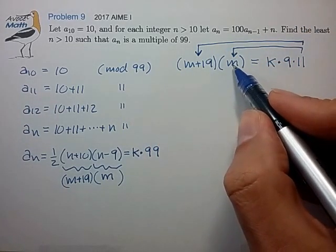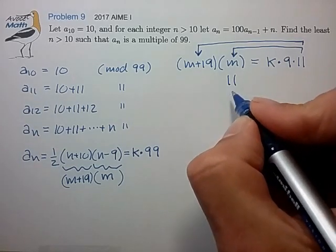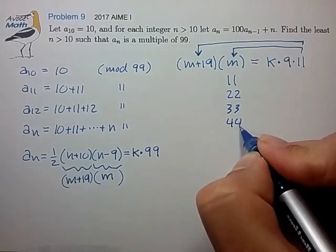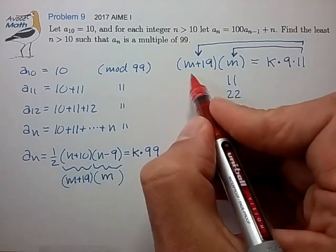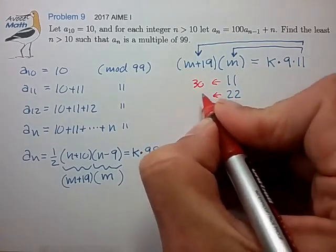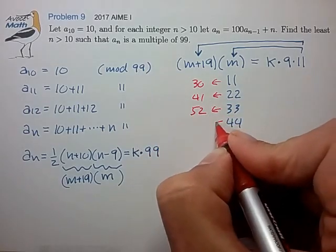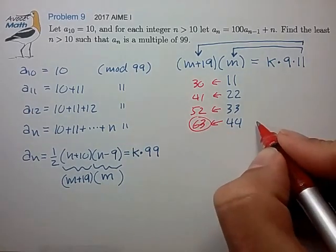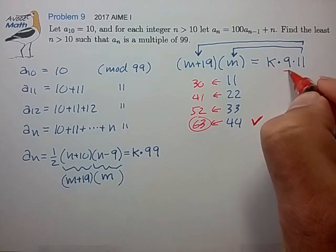In the first case, we're looking for m to pick up the factor of 11. So m would have to equal 11, perhaps 22, 33, 44. And if we back calculate what the value of m plus 19 is, this works out to 30, 41, 52, 63. Now 63 is a factor of 9, so this does satisfy the condition of picking up a factor of 9 and 11.